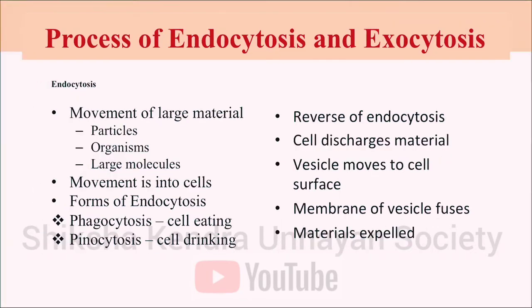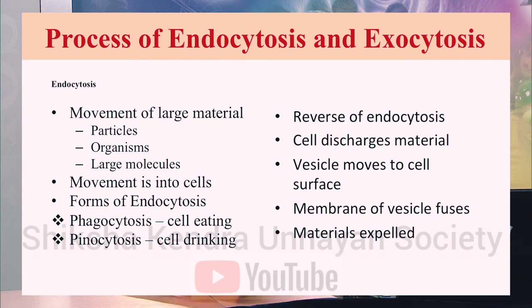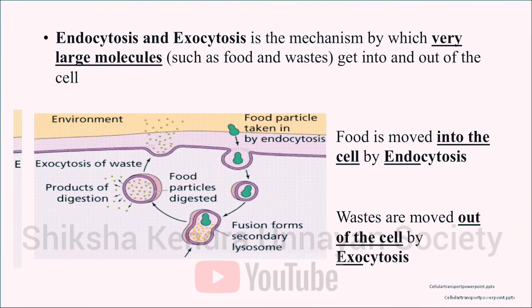Two other transport mechanisms are endocytosis and exocytosis. Endocytosis is the movement of large material — such as particles, organisms, and large molecules — into the cell. It can be of two types: phagocytosis, where large solid molecules are engulfed (cell eating), and pinocytosis, where liquid material is taken in. In phagocytosis, the material contacts the surface of the phagocyte and causes the outer cell membrane to indent; the indented membrane is then pinched off inside the cell to form a vacuole containing the engulfed material.